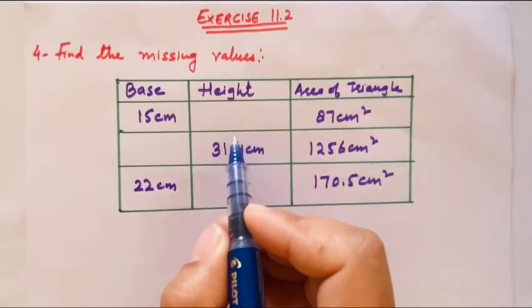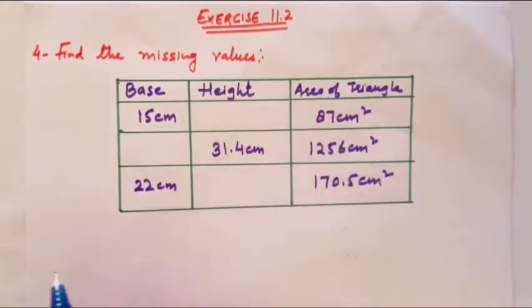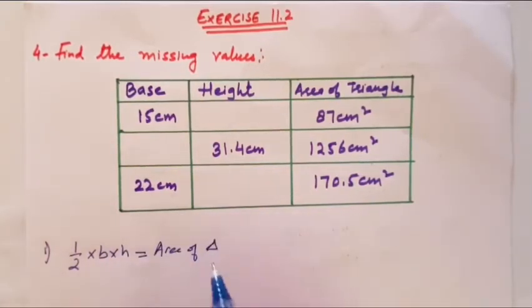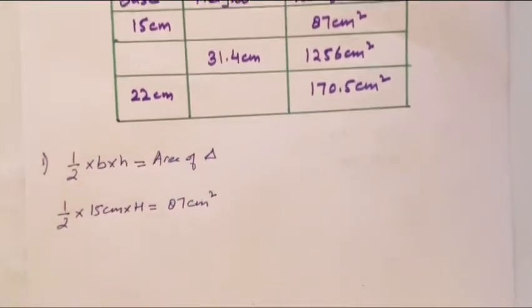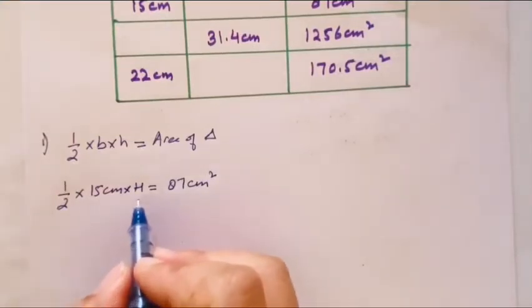As we know that area of triangle is half base into height equals to area of triangle. In the first part, base is given as 15 centimeter, you have to find height, and area is given as 87 centimeter square. So you have to find height.